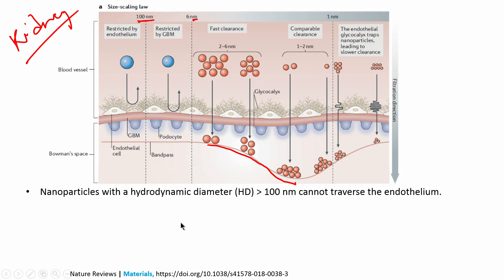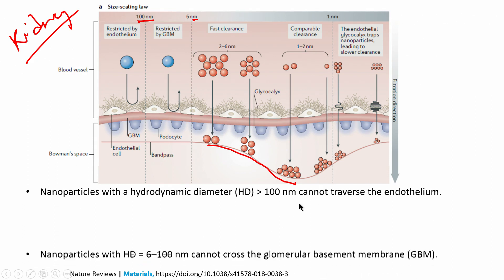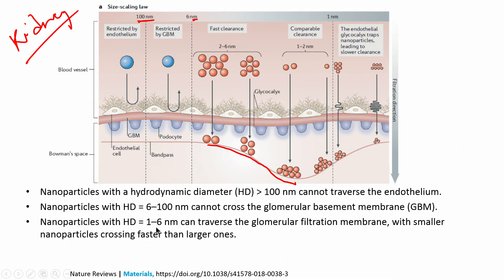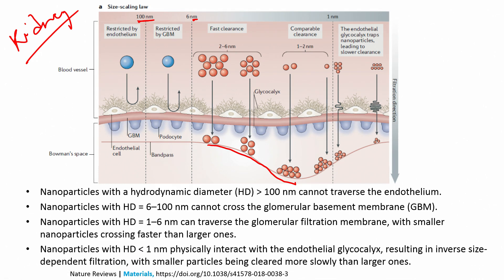Nanoparticles with a hydrodynamic diameter greater than 100 nanometers cannot traverse through the endothelium. In between 6 and 100 nanometers they cannot cross the basement membrane, which is fairly impermeable to these particles. Once you get down between 1 and 6 nanometers they can go through this basement membrane — the smaller they are the faster they go through. For nanoparticles with hydrodynamic diameter less than 1 nanometer, they will interact with the endothelial glycocalyx, meaning they have a longer path to travel, which causes these smaller particles to have a larger residence time in the blood vessel region.